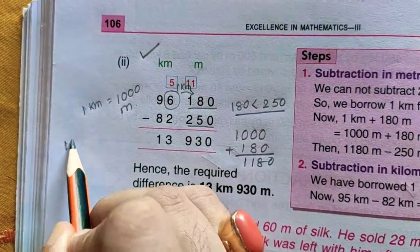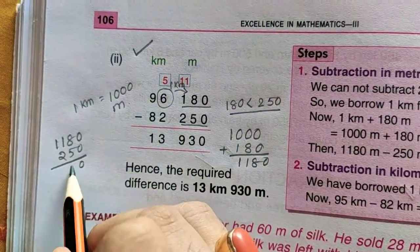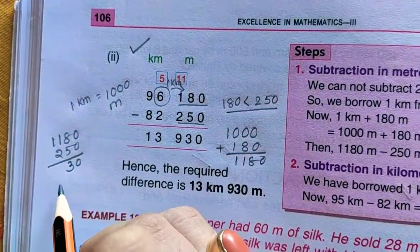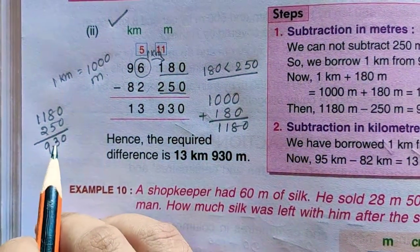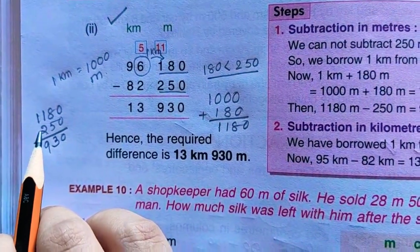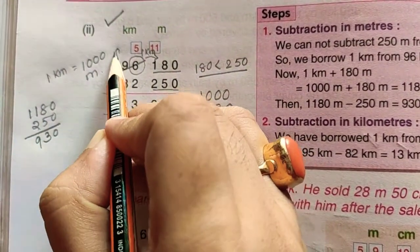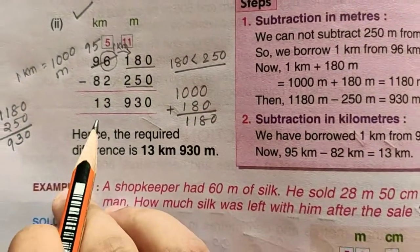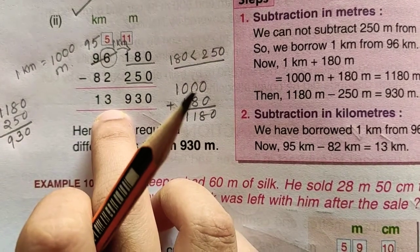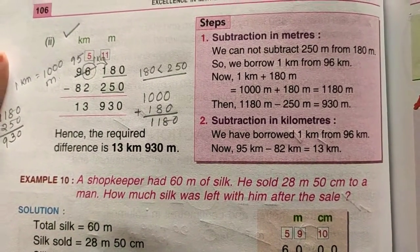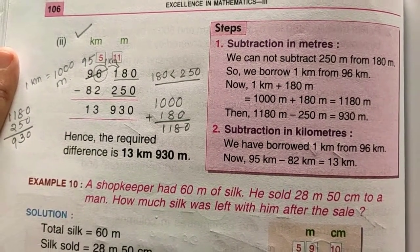1180 minus 250 equals 930 meter. Since we borrowed 1 kilometer from here, it will be reduced to 95. 95 minus 82, that is 13 kilometer. So this was the subtraction where we are borrowing kilometer to convert to meter.